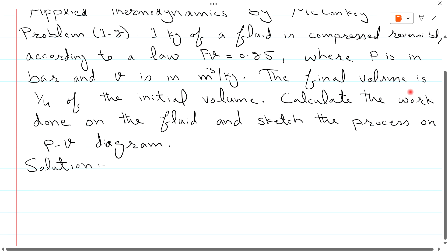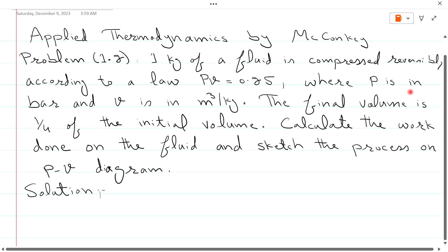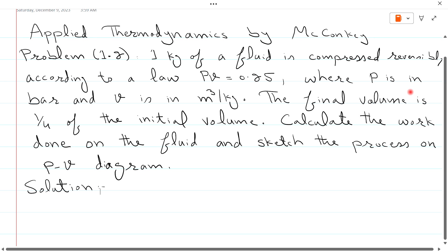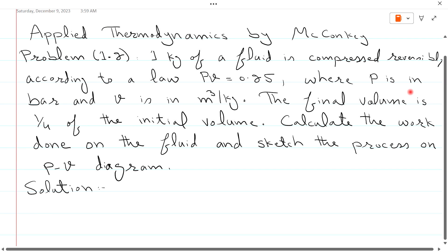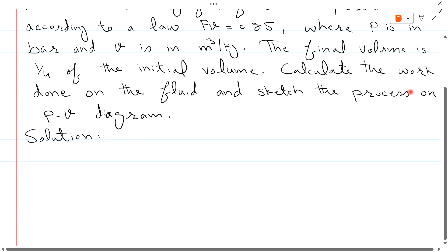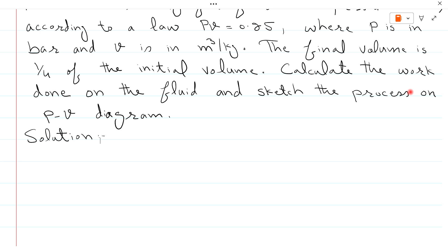First, we will find the work done on the system. As this is a compression process, work will be done on the system. We are given that PV = 0.25, where the unit of P is bar and the unit of V is meter cube per kg.